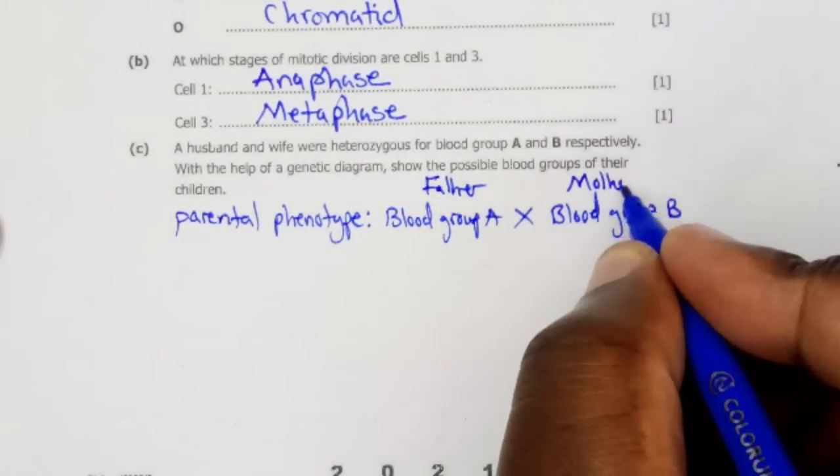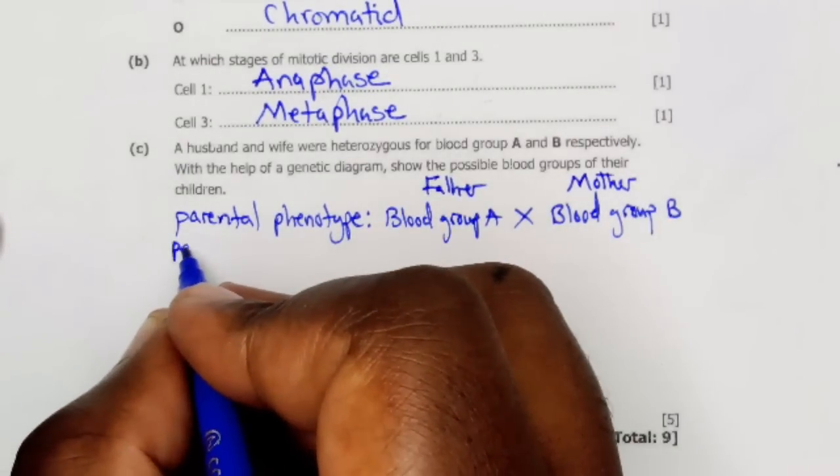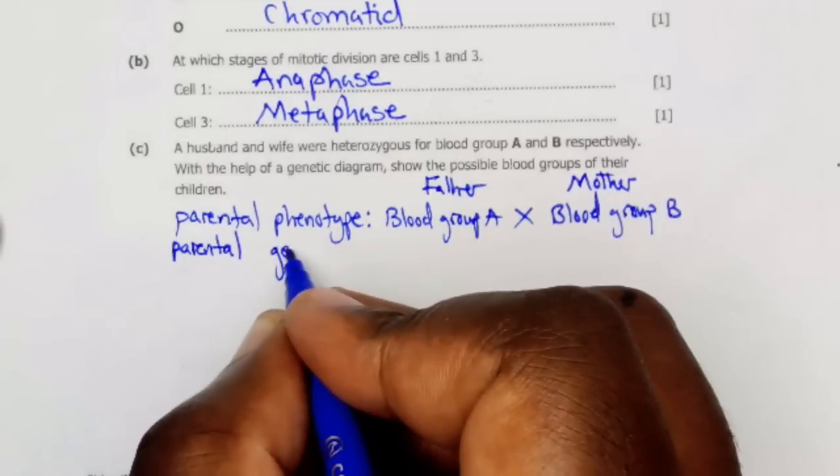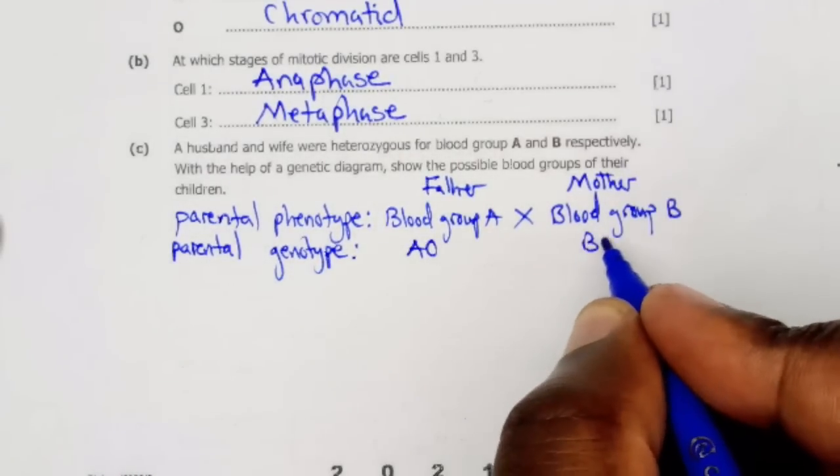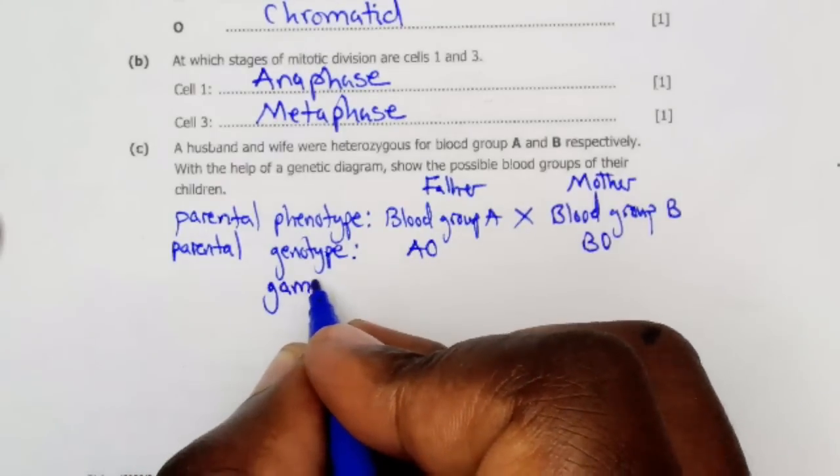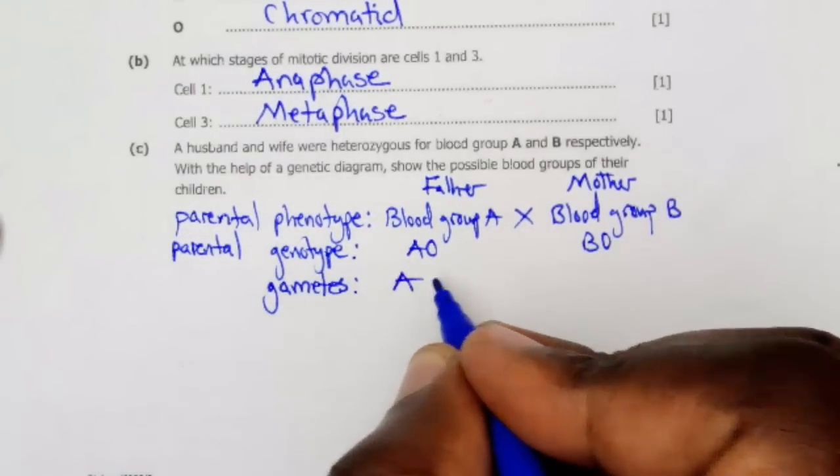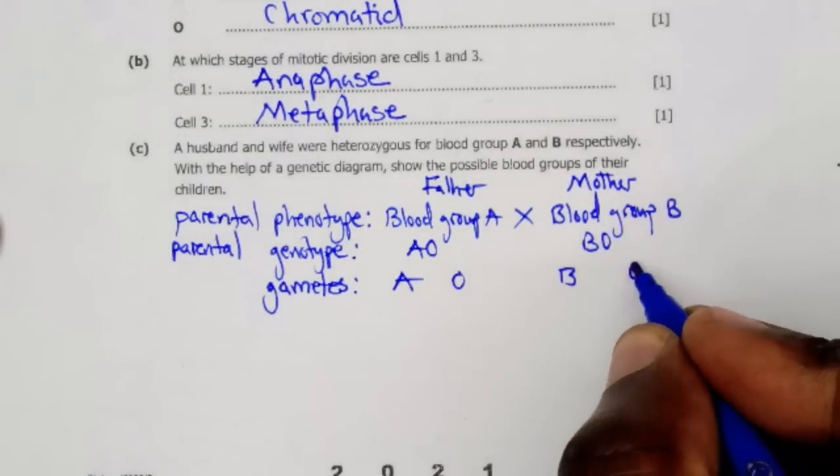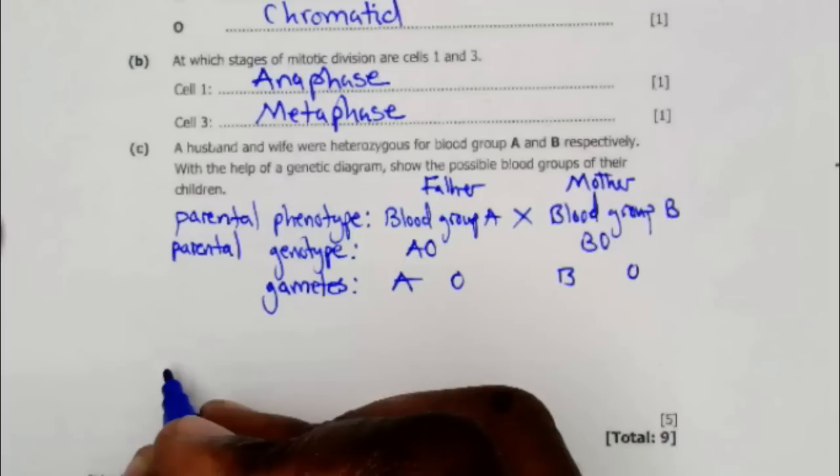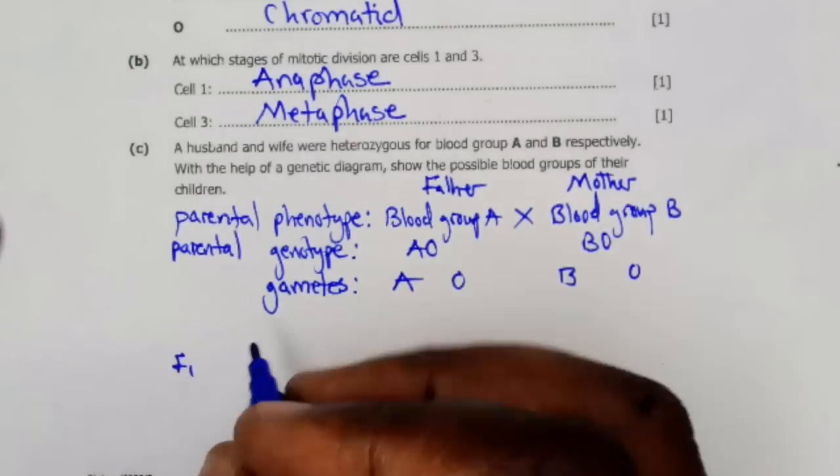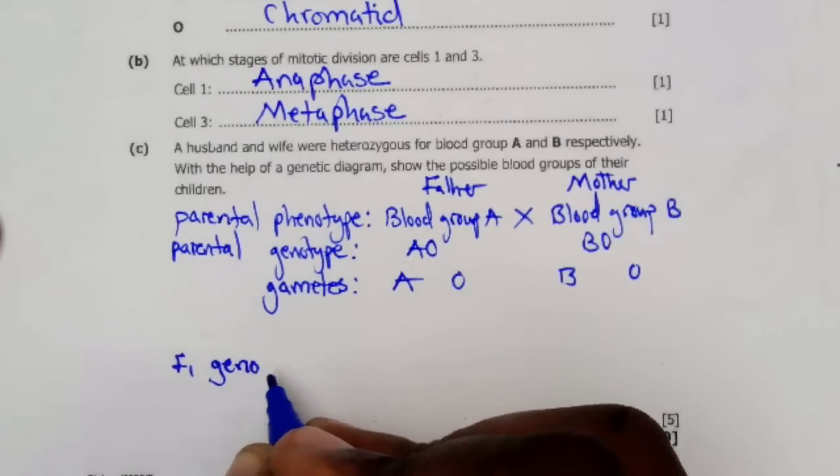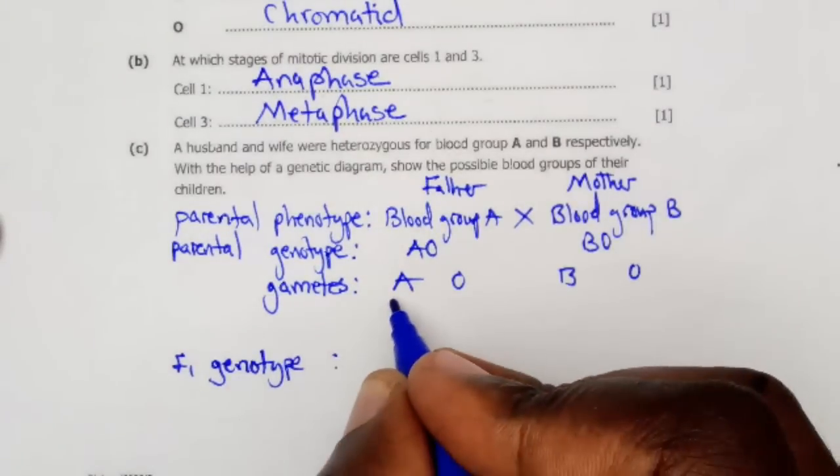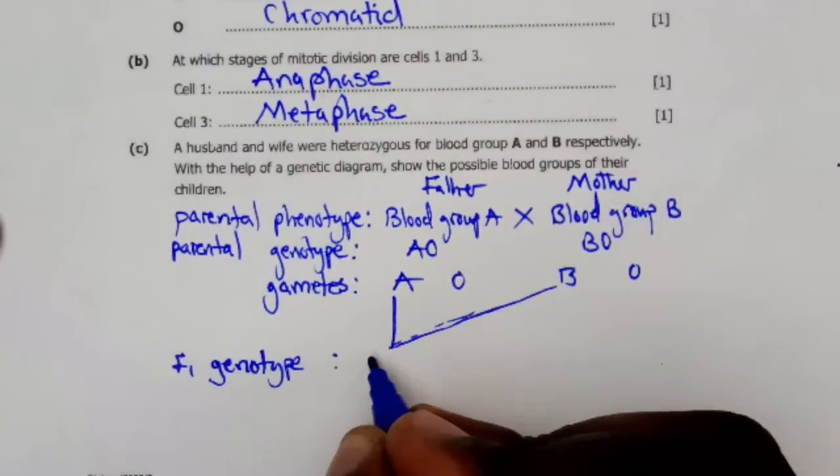Then next step, we write the parental genotype. We write AO, heterozygous, and BO, meaning that it's heterozygous. Then we write the gametes. To write the gametes, we separate A from O. B, we also separate it from O. Then next, we show the F1 offspring genotype and we show the random crossing. So A will cross with B creating AB. A will also cross with O creating AO. O will then cross with B creating BO, and O crosses with O.